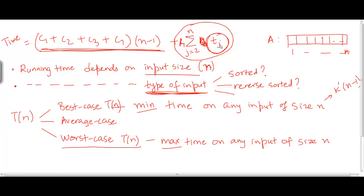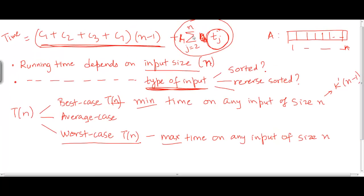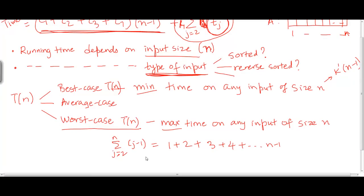The worst case time will result when t_j is j minus 1. What's the summation of this series, j equal to 2 to n, of j minus 1? When j equals 2 you get 1, j equals 3 you get 2, j equals 4 gives 3, j equals 5 gives 4, and so on. Finally when j becomes n this is n minus 1. So this series is simply the sum of the first n minus 1 numbers, which is n(n-1) divided by 2.